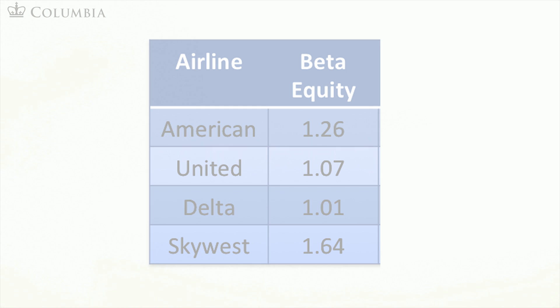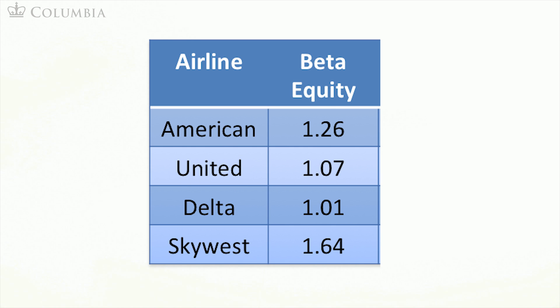In the table, I'm showing you the equity betas of different airlines: American Airlines, United Airlines, Delta, and SkyWest. I put together this information from Yahoo Finance in August of 2017.